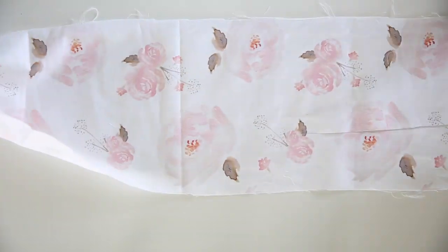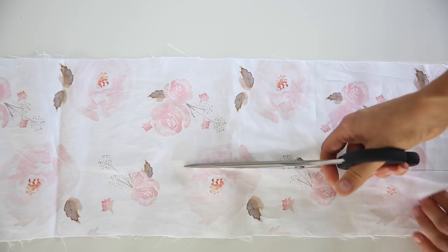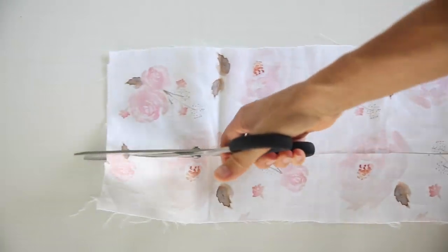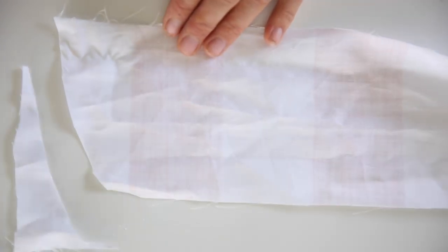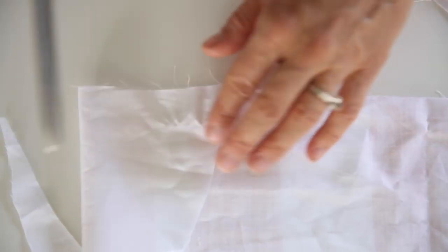We're going to begin this project by cutting out the pieces. So first I cut out my casing which I made 106 inches long by 3 inches wide. You can actually make it as long or short as you want it to depending on which space you're decorating.